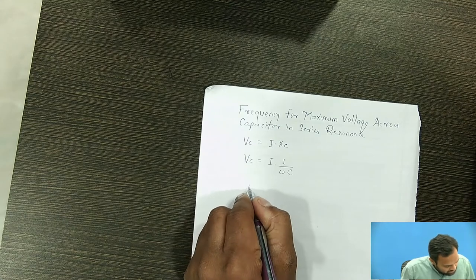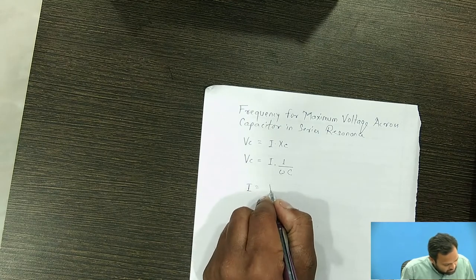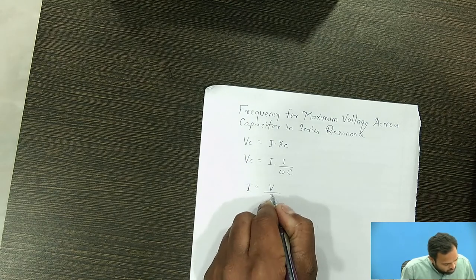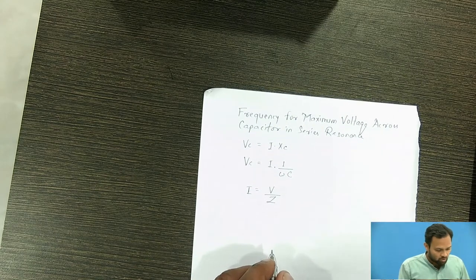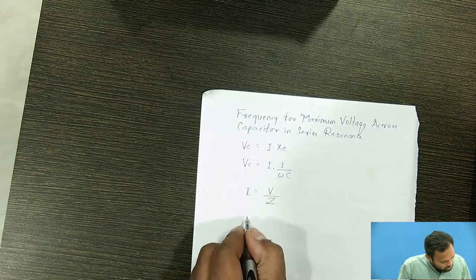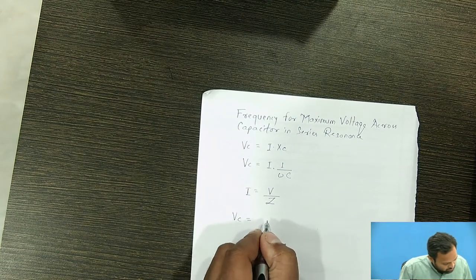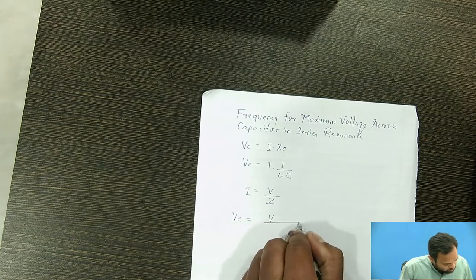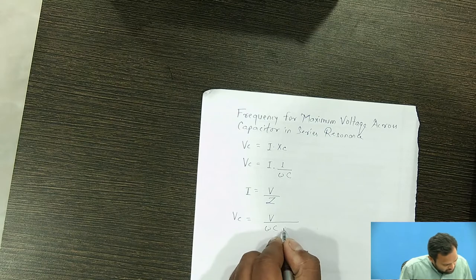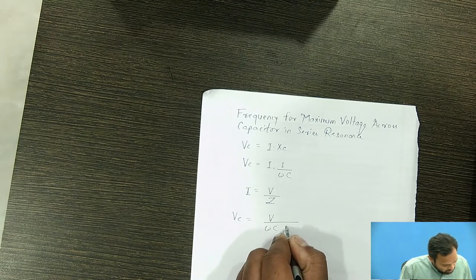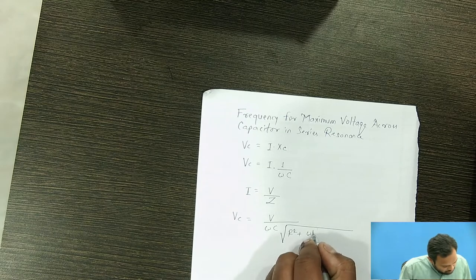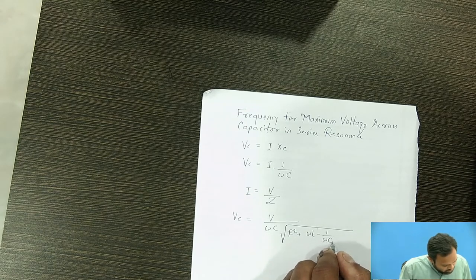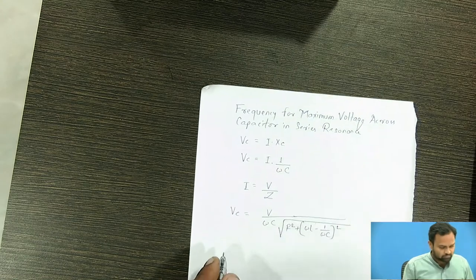Current is represented by voltage upon impedance. So Vc is represented by V upon omega into C. I will directly write down the magnitude of impedance, that is R squared plus omega L minus 1 upon omega C, the whole bracket squared.